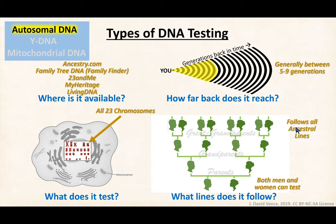Autosomal DNA is the most popular by far. Nearly every company available today gives it. It only reaches back about five to nine generations — you typically start to lose DNA from all of your ancestors at that point. It tests all 23 of your chromosomes and follows every biological line going back in time, so both men and women can take the test and you can map any of your ancestral lines.